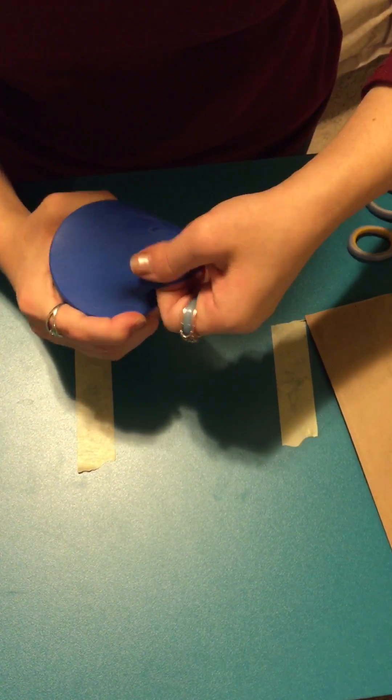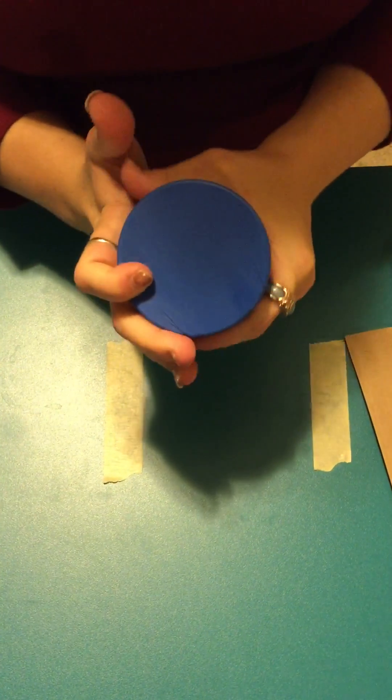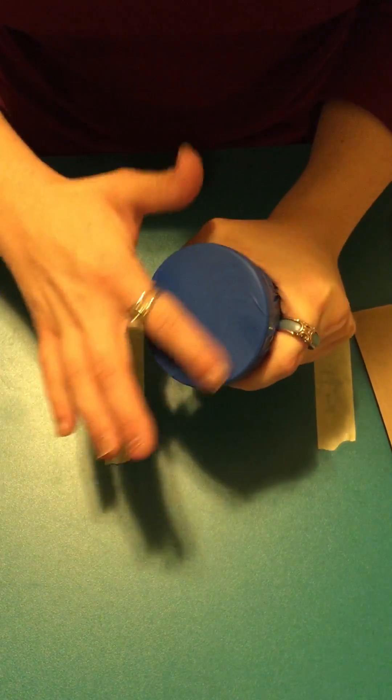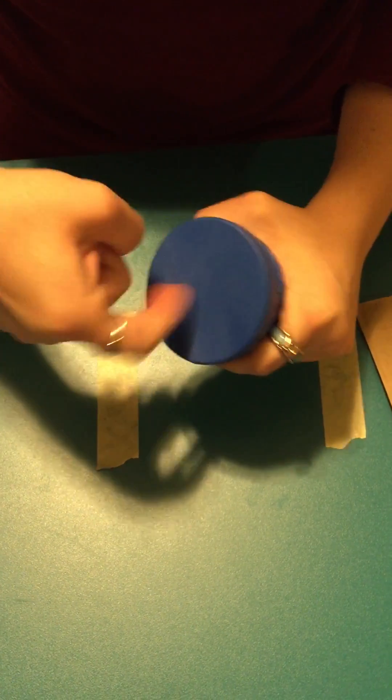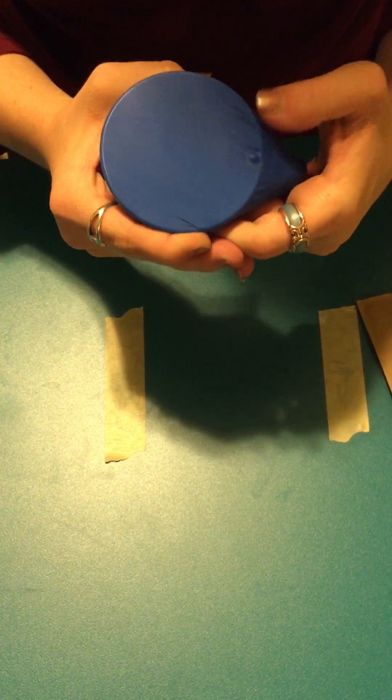To tighten the tension, I am going to pull the balloon down tight. The tension is tight and we do not see a dip anymore in the surface. Now I'm going to flick it again. Did you hear that the pitch changed?